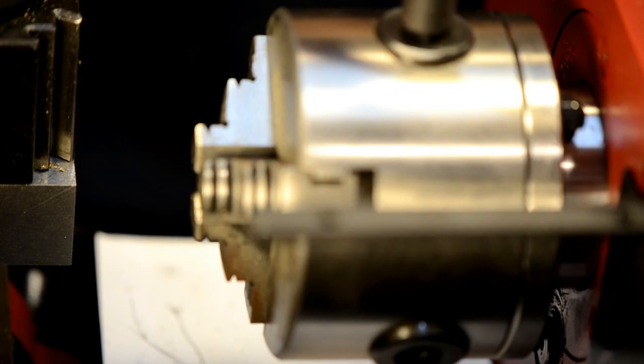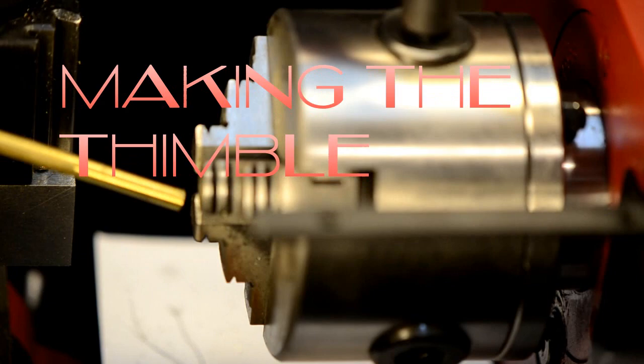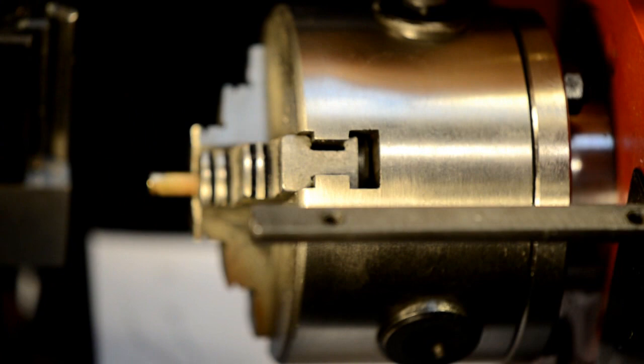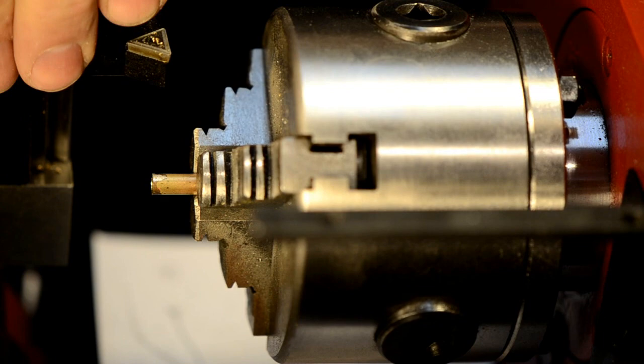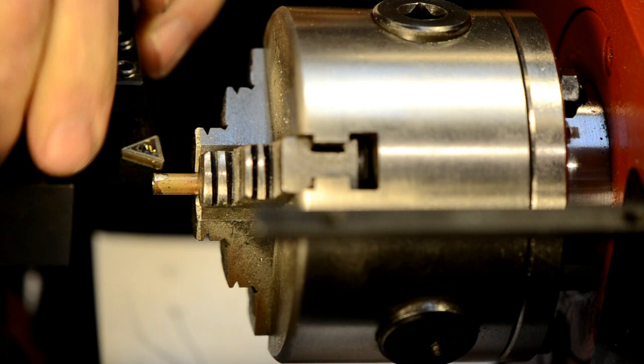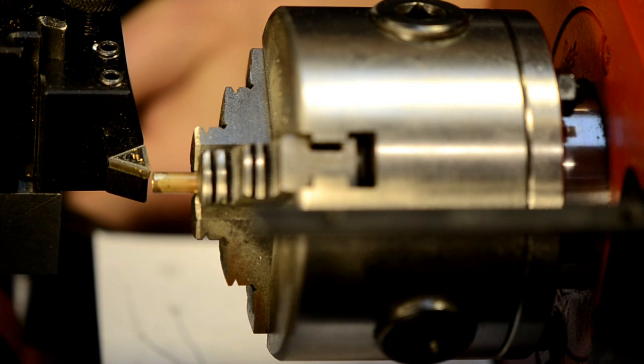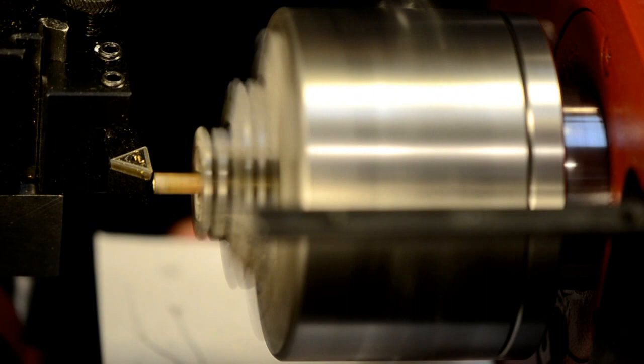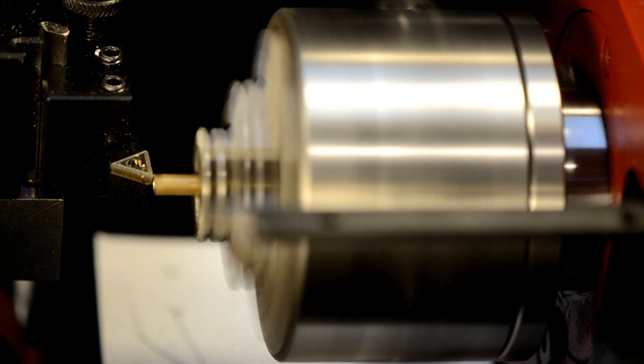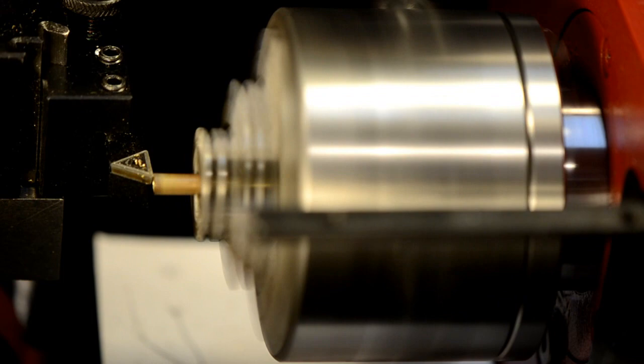The first thing we need to do is to get some stock that we can make our thimble from. I'm using brass tubing that I got from my local hobby shop. The tubing is I believe 154 thousandths of an inch, but the important thing here is that the thickness of the wall tubing is only 14 thousandths of an inch.